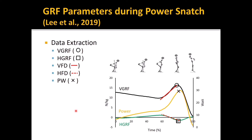This slide shows how the ground reaction force parameters were extracted. The graph shows whole body power (yellow line), vertical ground reaction force (black line), and horizontal ground reaction force (green line). VGRF is the instantaneous peak vertical ground reaction force (circle). HGRF is the instantaneous peak horizontal ground reaction force (square). VFD is the rate of vertical force development (solid red line slope), and HFD is the rate of horizontal force development (dotted red line slope).